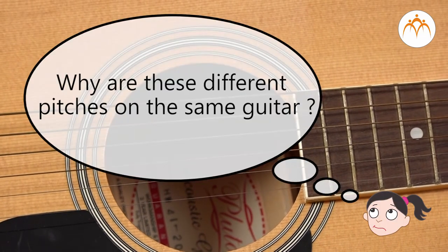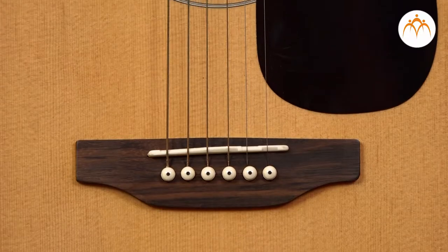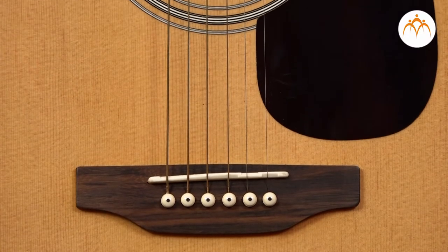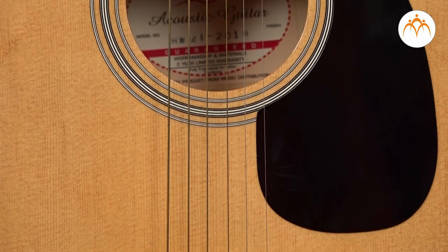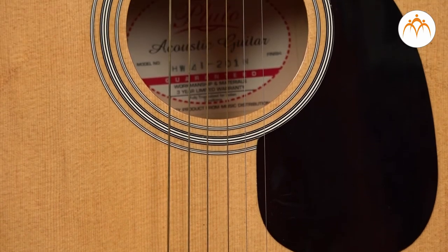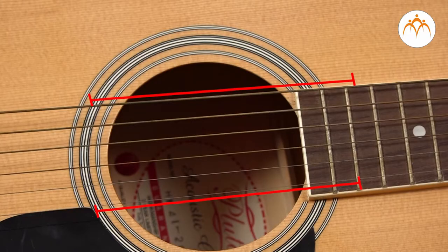Why are these different pitches on the same guitar? If you look at the wires closely, they are of different material. The thickness of each wire is also different.